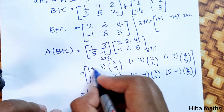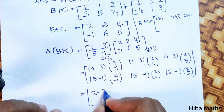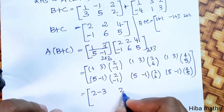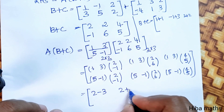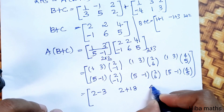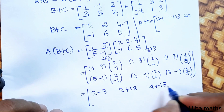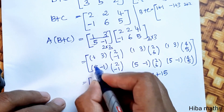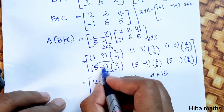Now computing the entries: 1 into 2 is 2, 3 into -1 is -3; 1 into 2 is 2, 3 into 6 is 18; 1 into 4 is 4, 3 into 5 is 15; then 5 into 2 is 10, -1 into -1 is plus 1; 5 into 2 is 10, -1 into 6 is -6; 5 into 4 is 20, -1 into 5 is -5.